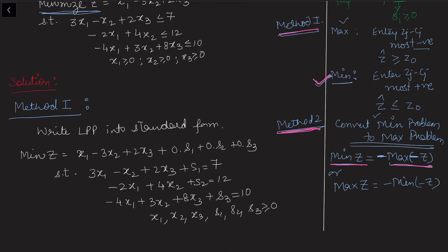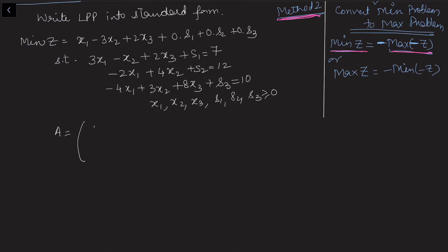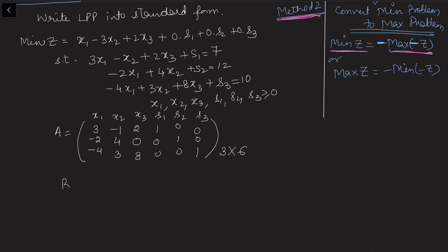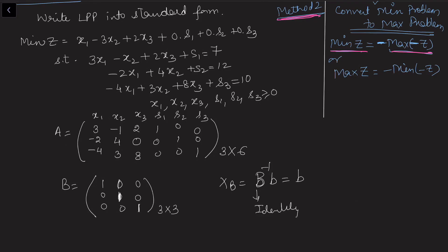All decision variables x1, x2, x3 and slack variables s1, s2, s3 are greater than or equal to zero. The coefficient matrix consists of columns corresponding to x1 (3, -1, -4), x2 (-1, 4, 3), x3 (2, 0, 8), and identity columns for s1, s2, s3. This gives a 3x6 matrix. Selecting the 3x3 identity sub-matrix as B, B-inverse is the identity, so xB equals the right-hand side: 7, 12, 10.